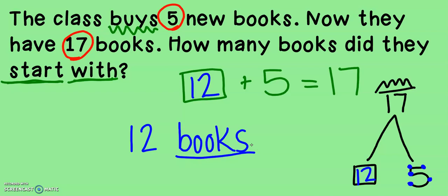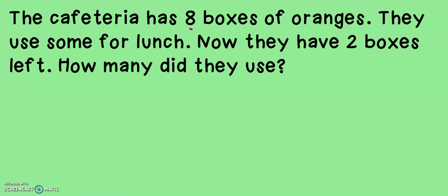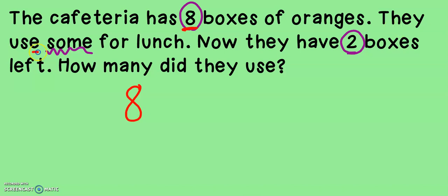Don't forget to add your label to show what the item was in the problem. The next problem says: The cafeteria has eight boxes of oranges. They use some for lunch. Now they have two boxes left. How many did they use? So let's make a number sentence to show what's happening in the problem. First, it says they have eight boxes of oranges, so let's write that eight down. They use some for lunch. If they use some of the boxes, does that mean they're going to have more or less? They're going to have less because they're using them. But I don't know how many they used yet because it uses the word "some."